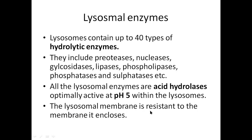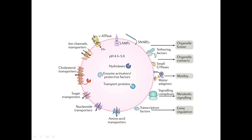The lysosomal membrane is resistant to the enzymes secreted by the lysosome itself. The luminal pH of the lysosome is around 4.5 to 5, maintained by ATP-driven proton pumps — keeping proton concentration high so that all the hydrolases can function thoroughly. Since lysosomes play a role in digestion, various transporters are present on the membrane. Once digestion is completed, the products may be supplied out of the cell for reutilization or destruction. Various other functions are also performed by the lysosome, facilitated by receptors on the membrane.